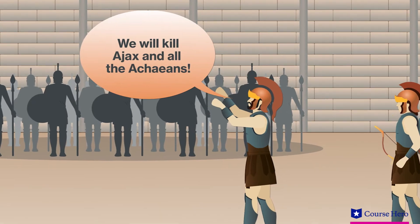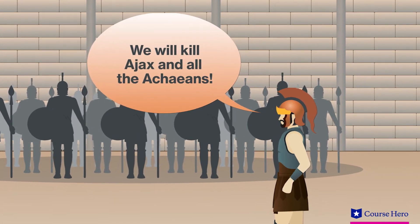Hector responds, promising to kill Ajax and the Achaeans. With many war cries, the armies clash again before the ships.